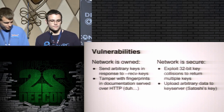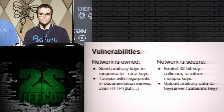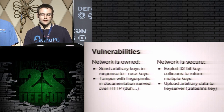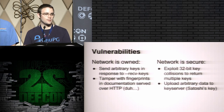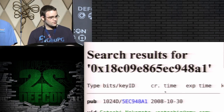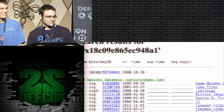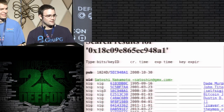This leads to two big classes of vulnerabilities. First, if the attacker owns the network, they can exploit the fact that GPG performs no verification — sending arbitrary keys back to you in response to receive-key requests. They can also tamper with fingerprints in documentation served over an insecure channel — I've seen many cases where documentation for what fingerprint to use is served over plain HTTP. Second, even if the network is secure, an attacker can still exploit 32-bit key collisions to return multiple keys with the same ID, and as you saw, the output looks very similar. They can also upload arbitrary data to the key server — for example, Satoshi Nakamoto's key has signatures from 1995 by 'Dave Murphy from Hackers' and from 2001 by 'John Titor the time traveler from Usenet' — neither seems legitimate, but the key server happily shows them.